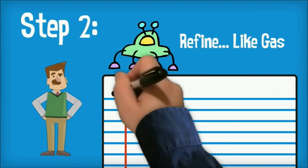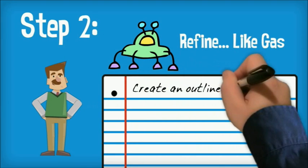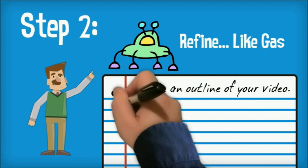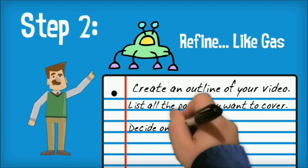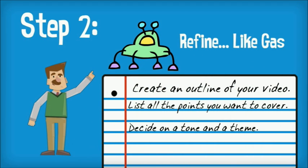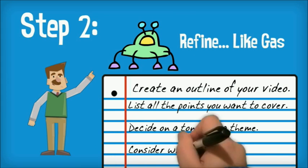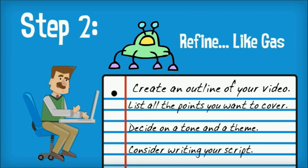Create a written outline of your video. List all the points you want to cover. Decide on a tone and a theme. And consider writing your script at this stage.